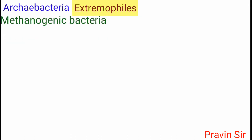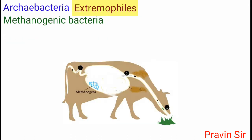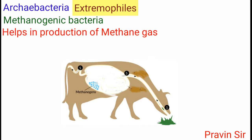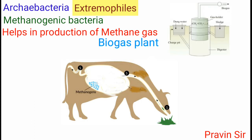Methanogenic bacteria, found in the gut of ruminants like cows and buffaloes, help in the production of methane gas in biogas plants.